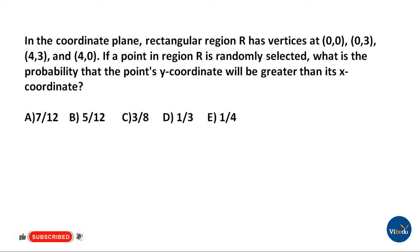The question is: in the coordinate plane, rectangular region R has vertices at (0,0), (0,3), (4,3), and (4,0). If a point in region R is randomly selected, what is the probability that the point's y-coordinate will be greater than its x-coordinate? Options are given.